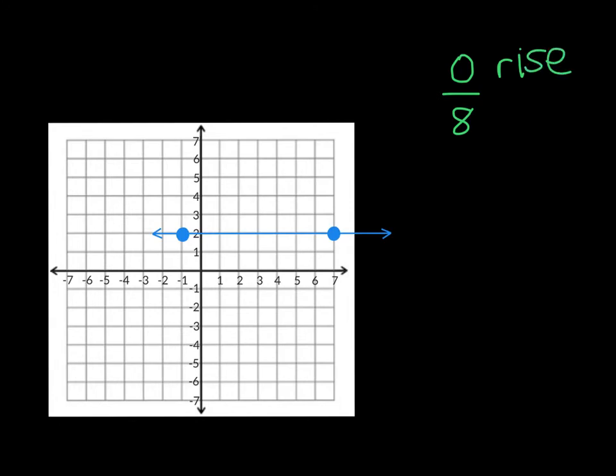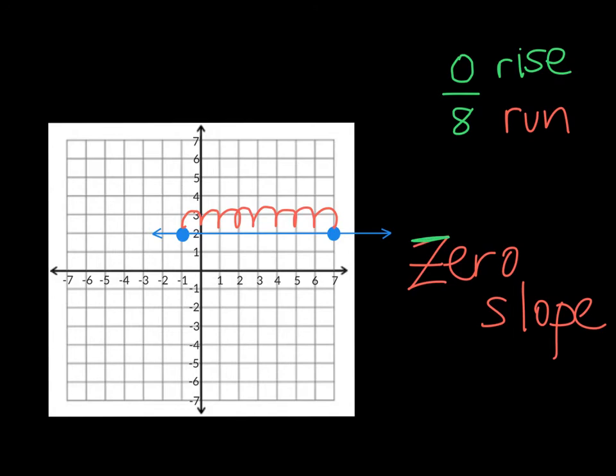So here's our slope, and we have 0 as the rise, which means that from our first point, we're not going to rise anywhere. But we do have a run, and we're going to run 1, 2, 3, 4, 5, 6, 7, 8. That's our run. This is going to give us 0 slope. And let's recall how we remembered this. The sticks in 0 are horizontal, as is this line, which is horizontal. And we can see that there is no inclination.